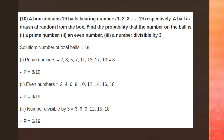A box contains 19 balls numbered 1 to 19. A ball is drawn at random. Find the probability that the number on the ball is a prime number, an even number, or a number divisible by 3. The prime numbers from 1 to 19 are: 2, 3, 5, 7, 11, 13, 17, and 19 — so there are 8 possible outcomes. The probability of getting a prime number equals 8 by 19.